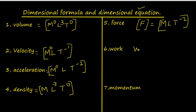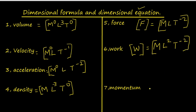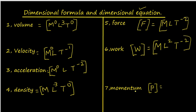Similarly for work: W in square brackets equals force into displacement S. The dimensional formula for force is M, L, T raised to −2, and adding the dimensional formula for S (which is L) gives M, L raised to 2, T raised to −2. For momentum: P in square brackets equals mass into velocity. The dimension for mass is M and for velocity is M raised to 0, L, T raised to −1, giving M, L, T raised to −1.